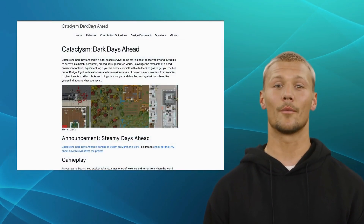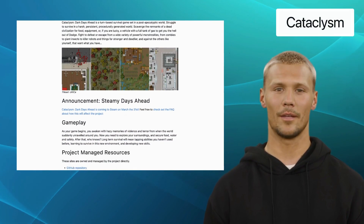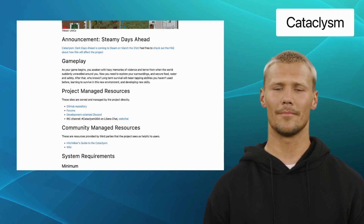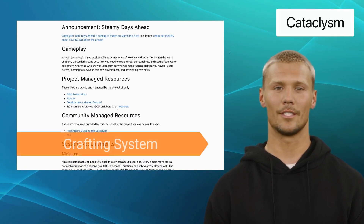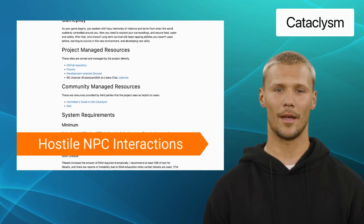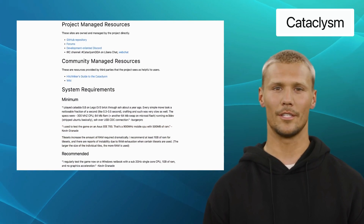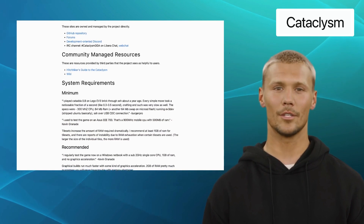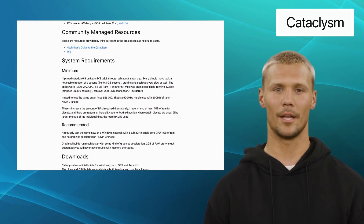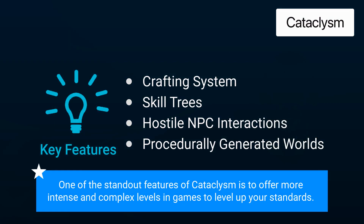Last but not least, we have Cataclysm. Cataclysm is a text-based survival game that offers a vast world to explore. It offers features like a crafting system, skill trees, hostile NPC interactions, and procedurally generated worlds. It challenges your decision-making skills and allows you to shape the outcome of the story, making each playthrough a unique experience. One of the standout features of Cataclysm is offering more intense and complex levels and gameplay to level up your standards.